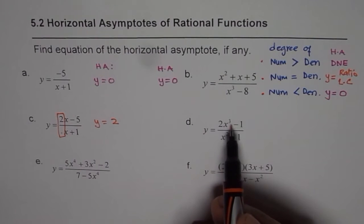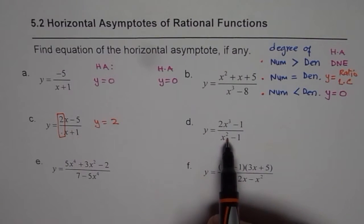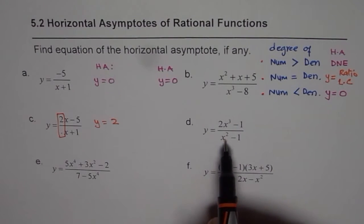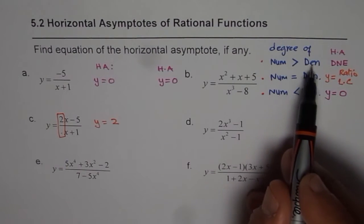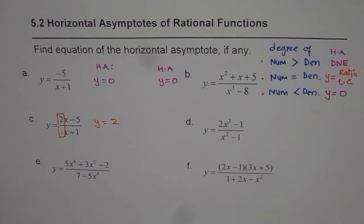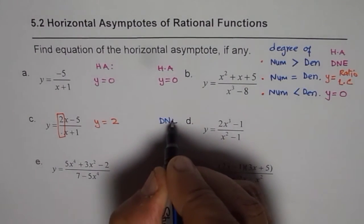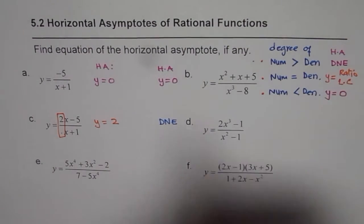In example D, the degree of the numerator is higher than that of the denominator — numerator degree is 3, denominator degree is 2. That is Case 1: numerator degree is higher, so the horizontal asymptote does not exist.